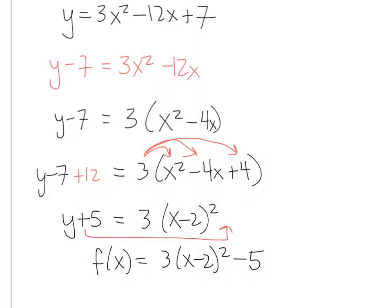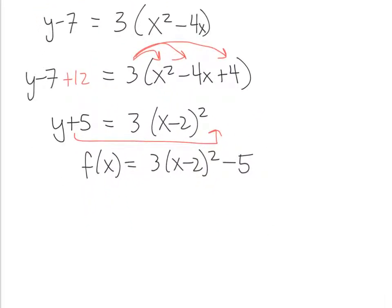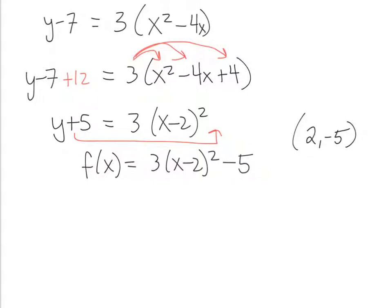So what's the vertex? From either of those last two lines, you can pull that information. The vertex is 2 comma negative 5. Most students prefer looking at the function form because it's the first method you learn in 7.5 — you take the opposite of the values. Here, when you move the 5 over, this becomes like a vertical shift. You're going to see that the plus C value indicates a vertical shift.